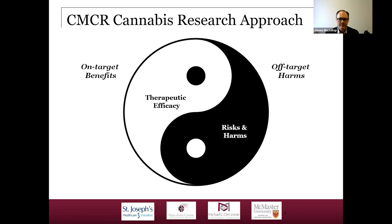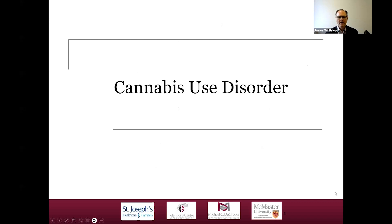We're always thinking about the balance between on-target benefits of possible medical applications of cannabis and the potential harms. Some of the work I'll talk about pertains to medical cannabis, but most of it pertains to what we know more generally about cannabis use and its associated risks and harms — always thinking about how we balance the two relative to each other in terms of the risk-benefit ratio. Let's get started with cannabis use disorders.